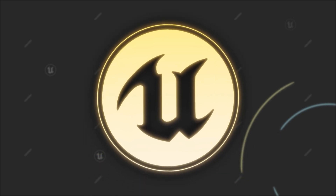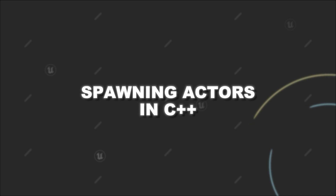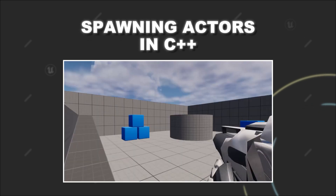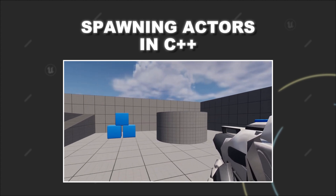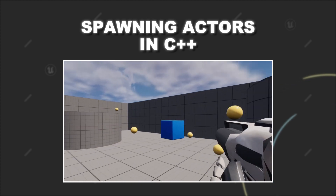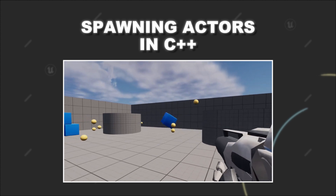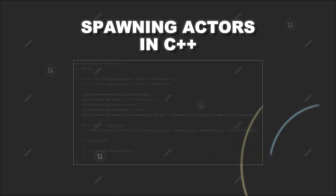Today I have another quick tutorial for you. Namely, we will have a look at how we can spawn Actors in C++ at runtime. For example, you can encounter the scenario where you have a projectile actor that you want to spawn every time a player shoots. So how do we do it?